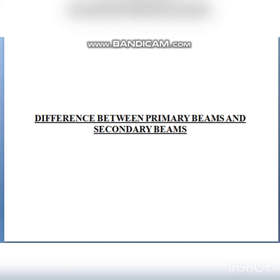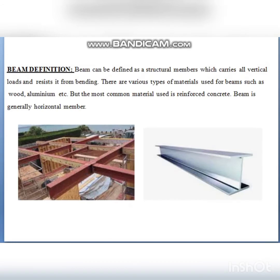Hello all, this is Subeshi from Unique Technologies Company. Today we are going to see a very important concept: the major differences between primary beams and secondary beams. Generally, a beam is a structural member which carries all vertical loads and resists bending moment — that is, it resists flexural action. There are various types of materials used for beams.